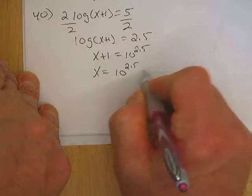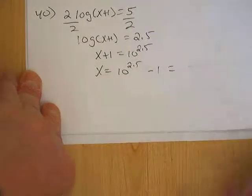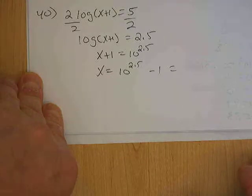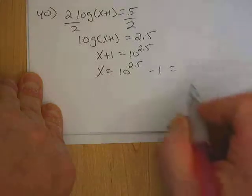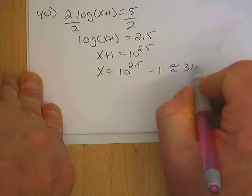I just subtract 1, and I have x equals 10 to the 2.5 minus 1, which equals about 315.2. That's all.